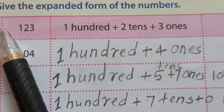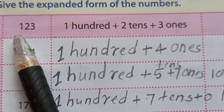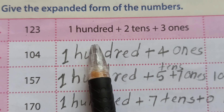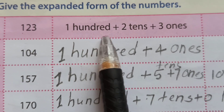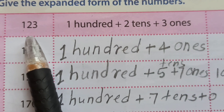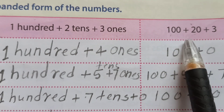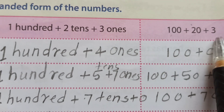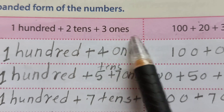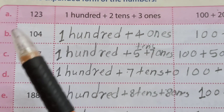For better understanding of expanded form, let's look at another example. 123 — how we expand: 1 hundred, 2 tens, and 3 ones. So 100 plus 2 tens plus 3 ones means 123. Another way: 100 plus 20 plus 3, because 2 tens means 20. Both types are correct.